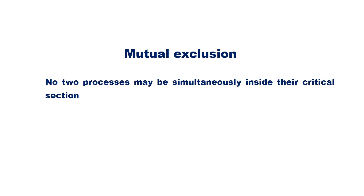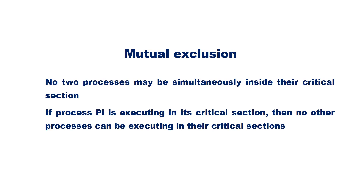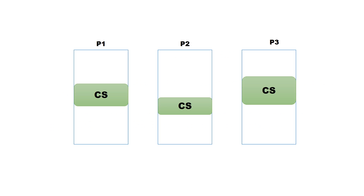A solution to the critical section problem must satisfy three requirements: mutual exclusion, progress, and bounded waiting. Mutual exclusion means no two processes may be simultaneously inside their critical section. If process P1 is executing in its critical section, then no other process can be executing in their critical sections. Assume three cooperating processes P1, P2, and P3. When P1 is executing in its critical section, P2 and P3 are not allowed to execute their critical section. Similarly, when P2 is inside the critical section, P1 and P3 are not allowed. And when P3 is inside the critical section, P1 and P2 are not allowed. At one time only one process is allowed to execute the critical section.